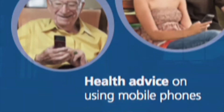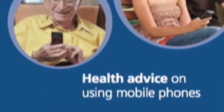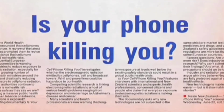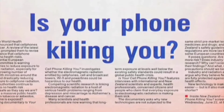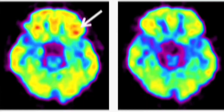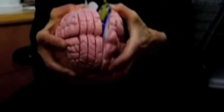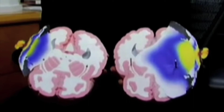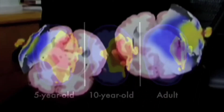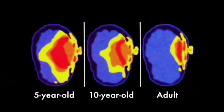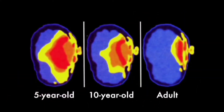The SAR value — Specific Absorption Rate — is the unit of measurement for the quantity of electromagnetic energy absorbed by the body when using a cordless device such as a mobile, tablet, or cordless phone.